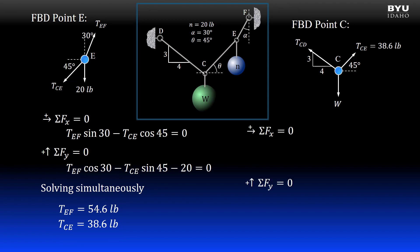I now write my equilibrium equations for point C. I will start with the x direction because we only have one unknown there. The equation is TCE, which is 38.6 multiplied by the cosine of 45 minus TCD times 4 over 5 to get the horizontal component pointing to the left.